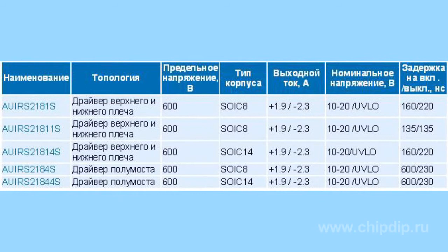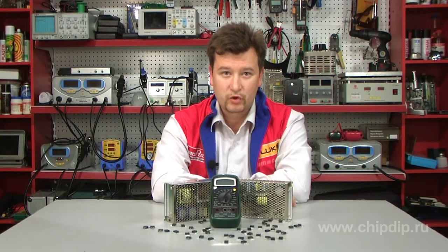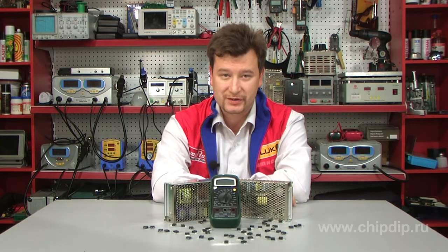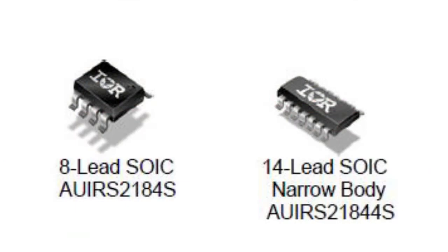Drivers generate high pulse current and offer minimum cross-conductivity. The floating channel can be used with N-channel power MOSFETs or IGBT transistors working at voltages of up to 600 V. Besides, drivers are equipped with protection from negative voltage surges, ensuring reliable and trouble-free operation even under the most unfavorable conditions.